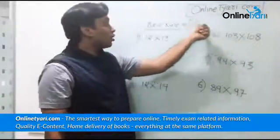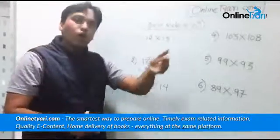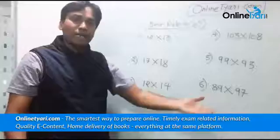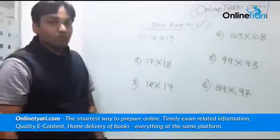So the base rule says that your numbers must be closer to 10 or 100 or 1,000 or 10,000, that's it, and then they are closer to each other. Now let us see what is the technique out here.